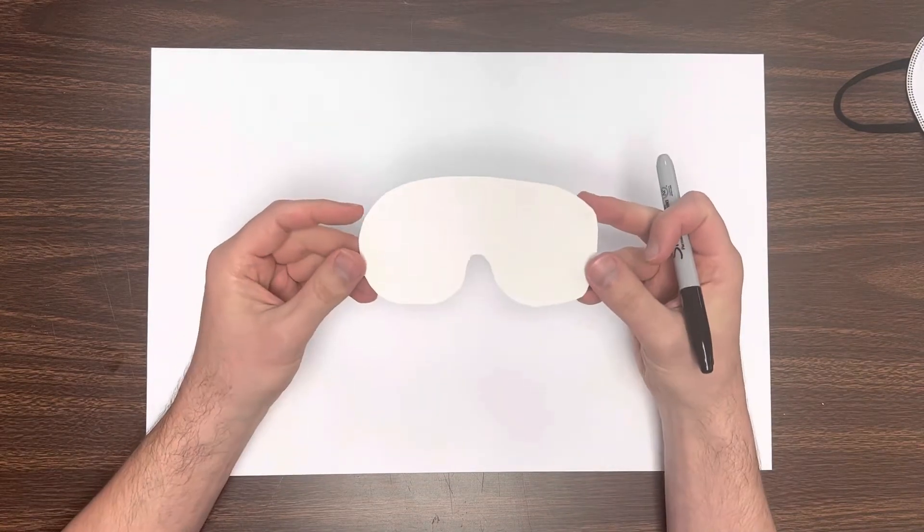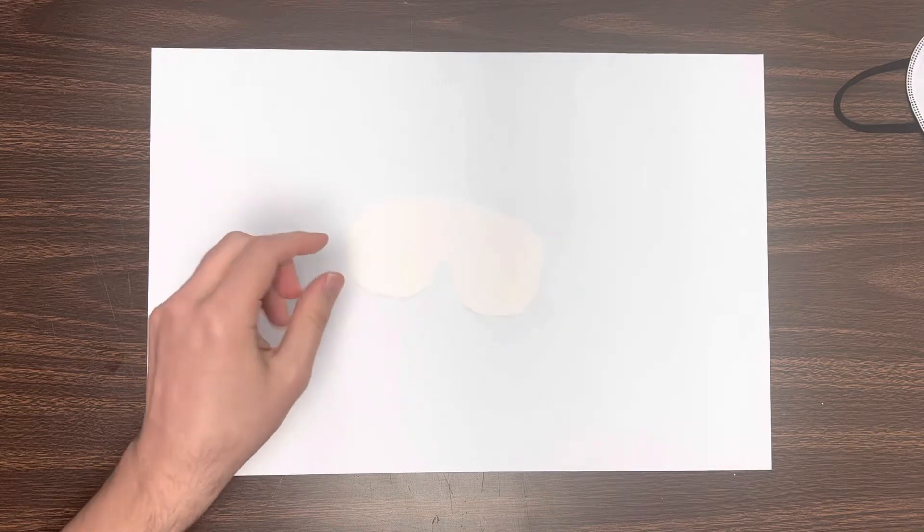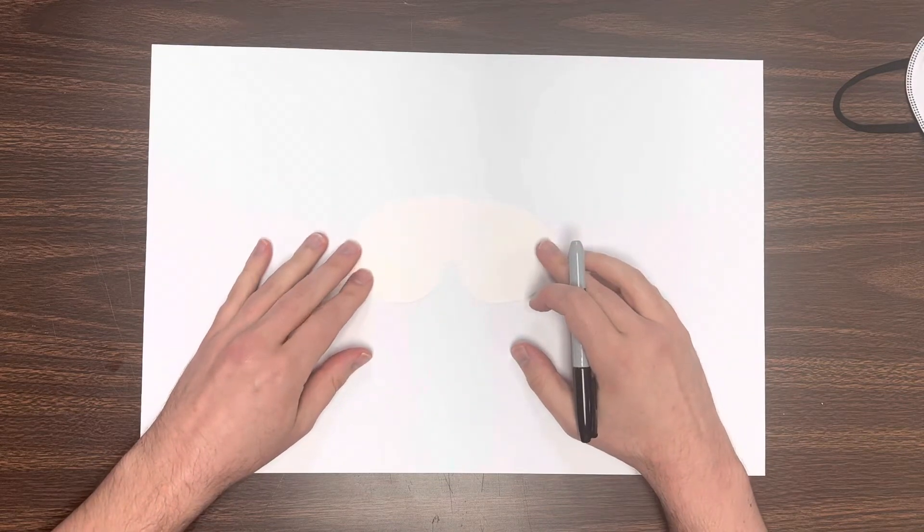So first thing we're going to do is we're going to start. Now our paper, we're going to have it long ways, so it's going to be horizontal. Now these are going to be your underwater goggles that you're going to be wearing. So we're going to put those at about the middle of the paper.